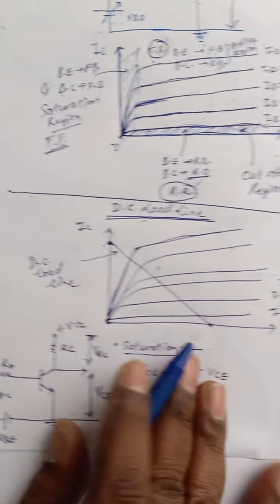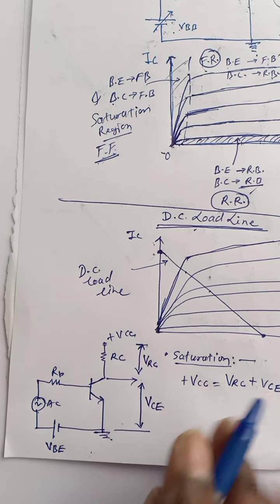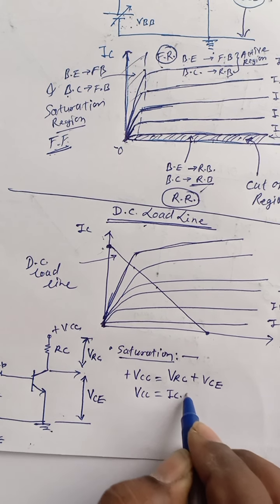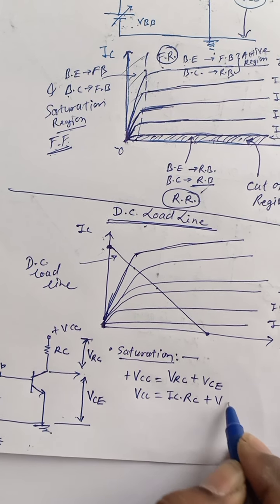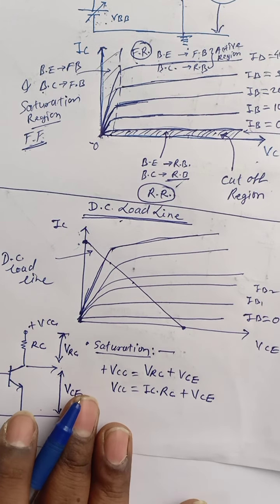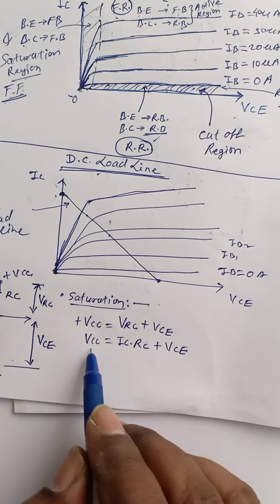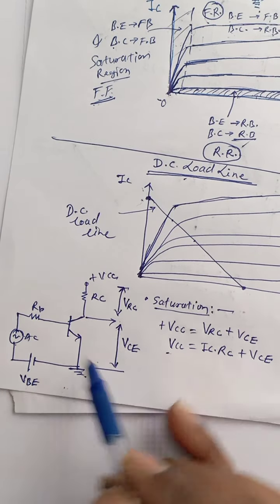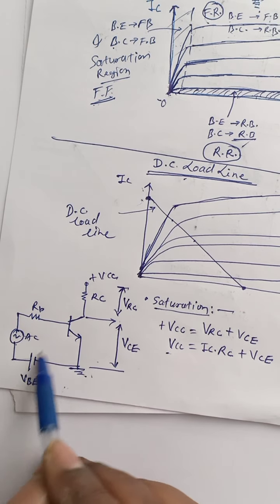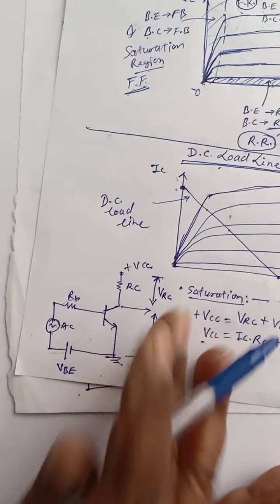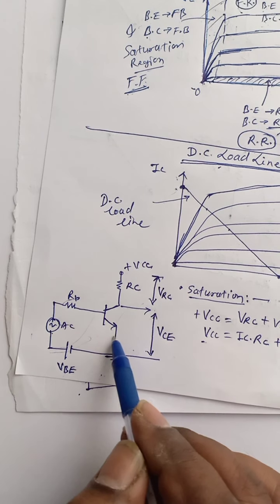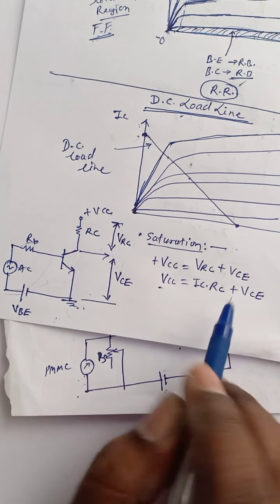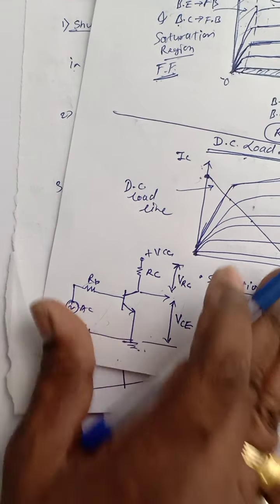This equation VCC = IC·RC + VCE is known as the output equation. From the circuit we can observe this output equation. Now consider when the transistor is operated at a certain point — what happens when transistor operates in saturation?